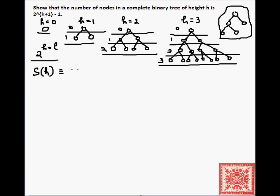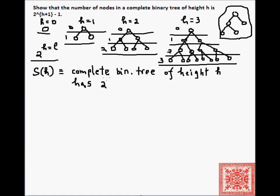So what is our statement here that we're trying to prove? We're going to be doing induction on h, and the statement we will be proving is that a complete binary tree of height h has 2 to the h plus 1 minus 1 nodes. The base case is S of 0, and this can be readily verified: a complete binary tree of height 0 has 2 to the 0 plus 1 minus 1, which equals one node.